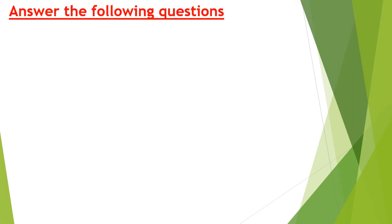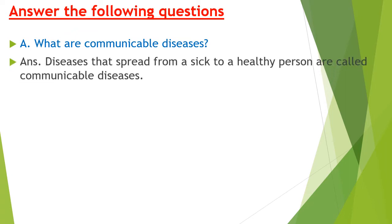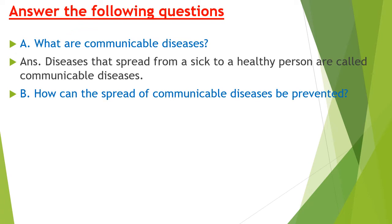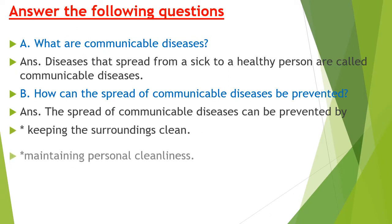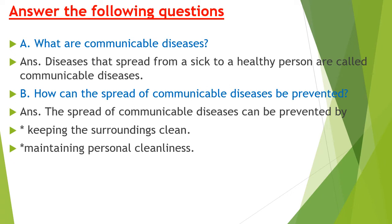Next exercise is answer the following questions. Part A — what are communicable diseases? Diseases that are spread from a sick person to a healthy person are called communicable diseases; they can be transmitted from one person to another. Part B — how can the spread of communicable diseases be prevented? The spread can be prevented by: keeping the surroundings clean, maintaining personal cleanliness, and keeping the sick person in isolation so that it may not affect other healthy persons in the house.